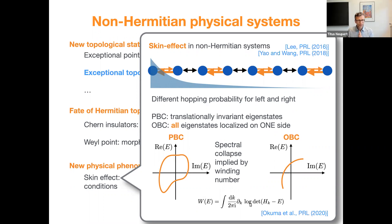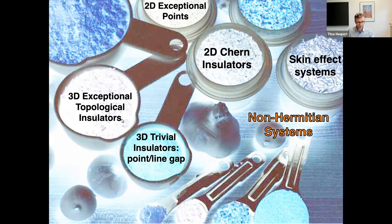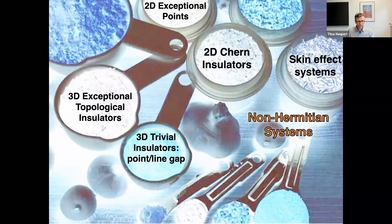I am done with the second part of my talk. I showed you ideas from non-Hermitian topological band structures: exceptional points, the skin effect, and the fact that Chern insulators are still stable. Now would be the time to come to the last part — three-dimensional exceptional topological insulators. Before doing so, maybe it's a good point to quickly ask whether there are questions about what I just mentioned.